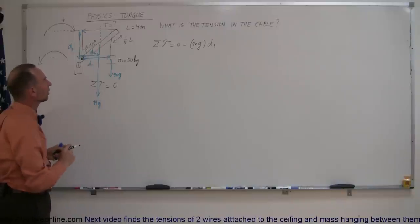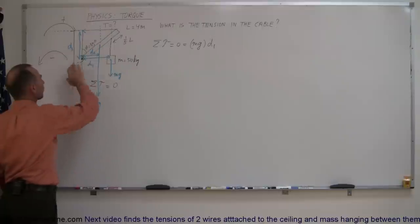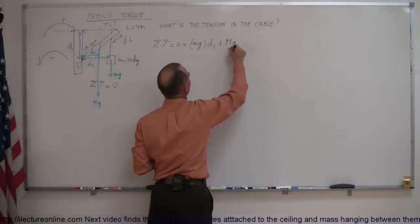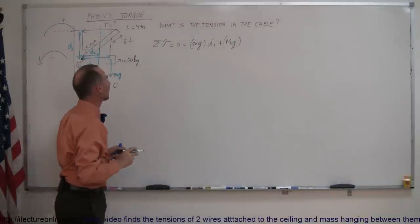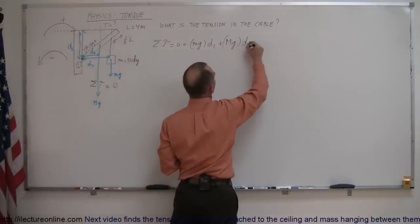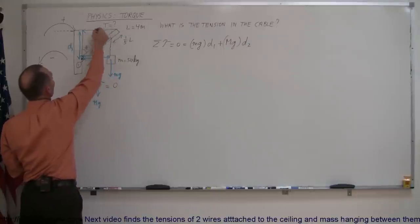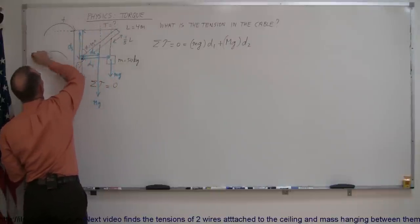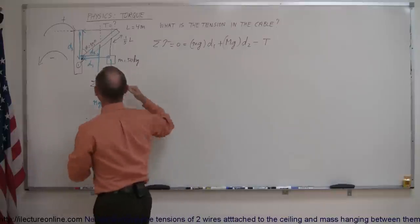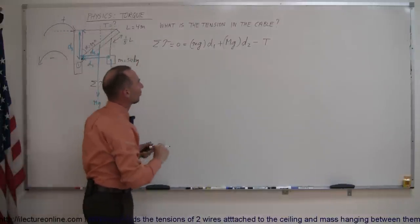First I want to get the correct equation on the board. The second torque is caused by big Mg acting downward, so it would cause the whole beam to swing in a clockwise direction — that's a positive torque: plus Mg times distance two. Finally, the tension pulling this way would pull the beam counterclockwise, so that's a minus tension times distance three, the distance from the line of action of that force to the pivot point.